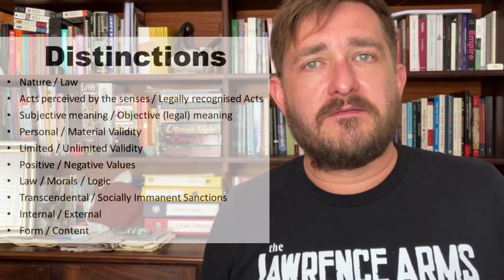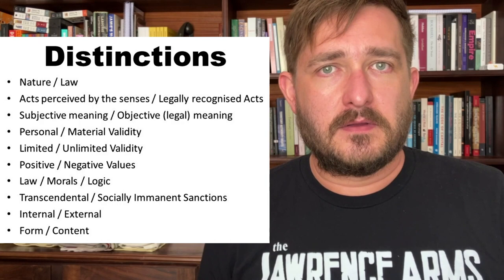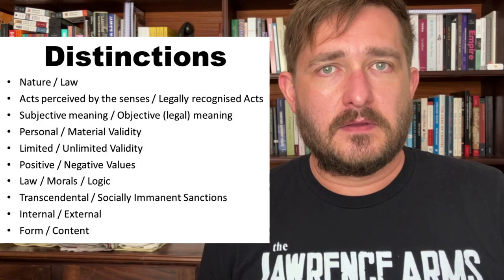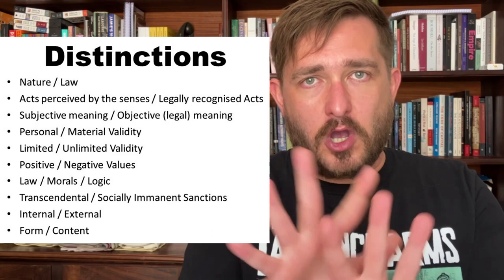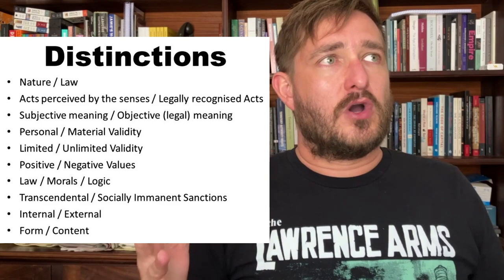Anyway, that's it for chapter one. Looking forward to doing chapter two next. Just to finish off: here is a list of the binary distinctions that Kelsen draws in this chapter — it may be a nice guide if you're reading it yourself, to keep next to you and refer back and forth to see the branching distinctions he keeps making, laying out the definitions and groundwork. Thank you very much, have a lovely day, and I'll see you next week.